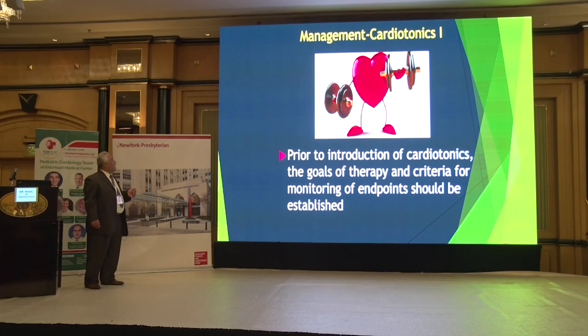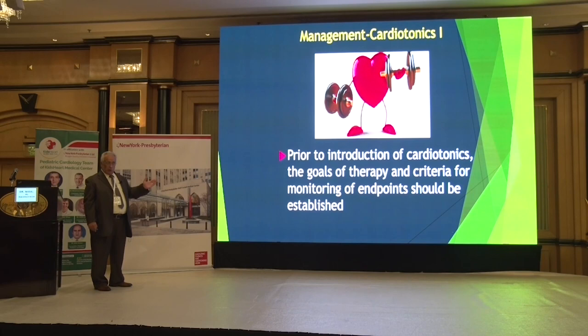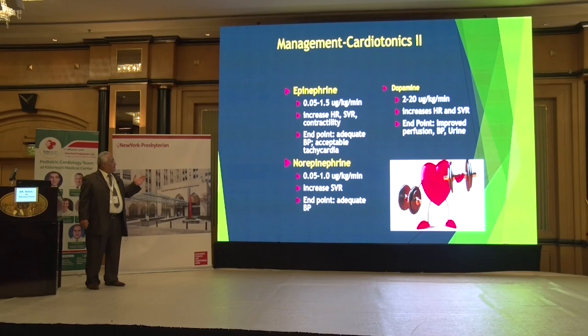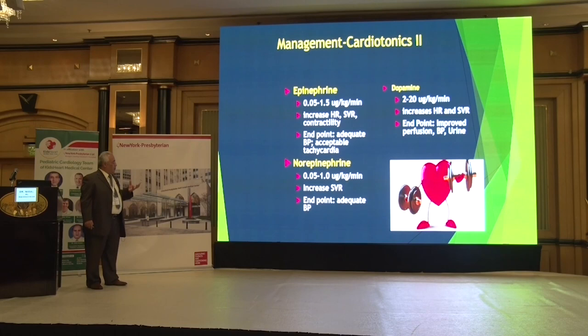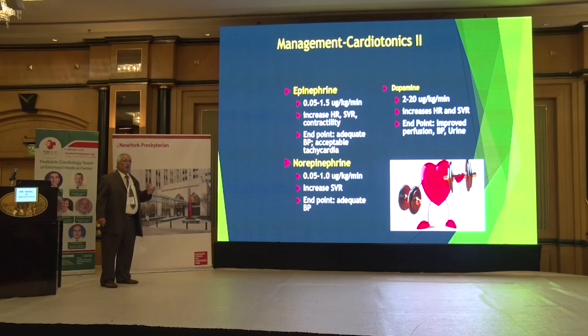Before starting carditonics, know your goal, what to monitor while treating, and your endpoint. Epinephrine (adrenaline): dose 0.05 to 1.5 micrograms/kg/min, sometimes up to 3. It increases heart rate, systemic vascular resistance, and contractility. The endpoint is adequate blood pressure and acceptable tachycardia. Norepinephrine is a much more potent vasoconstrictor at a similar dose; it increases systemic vascular resistance, and the endpoint is adequate blood pressure.